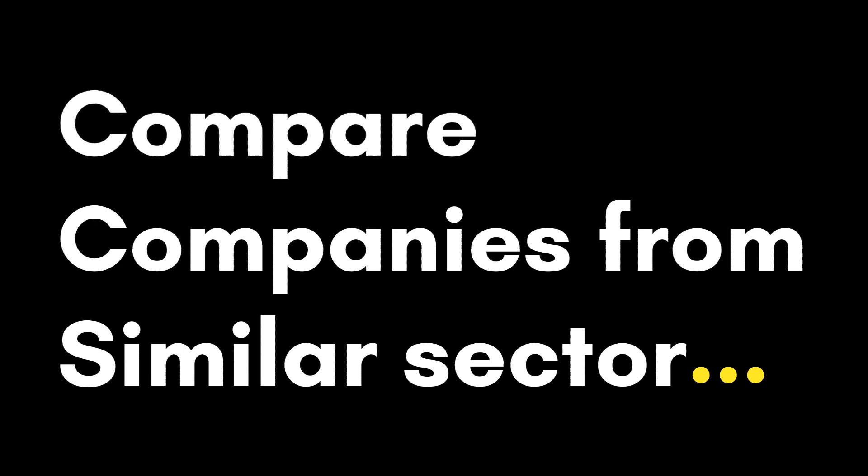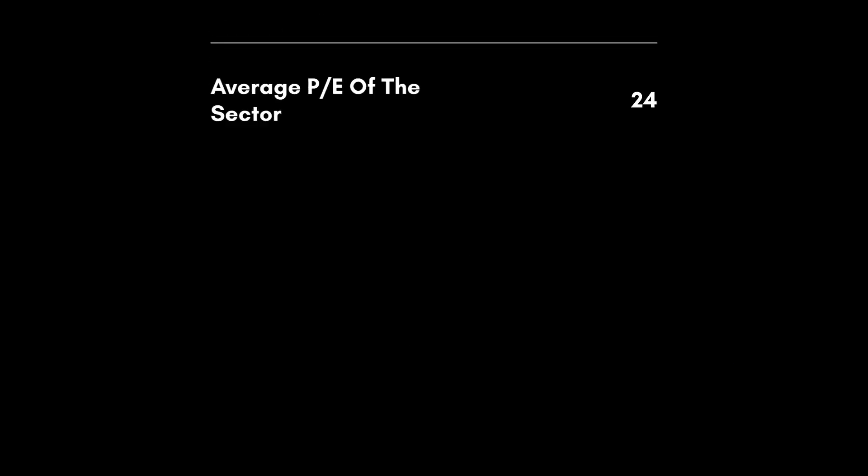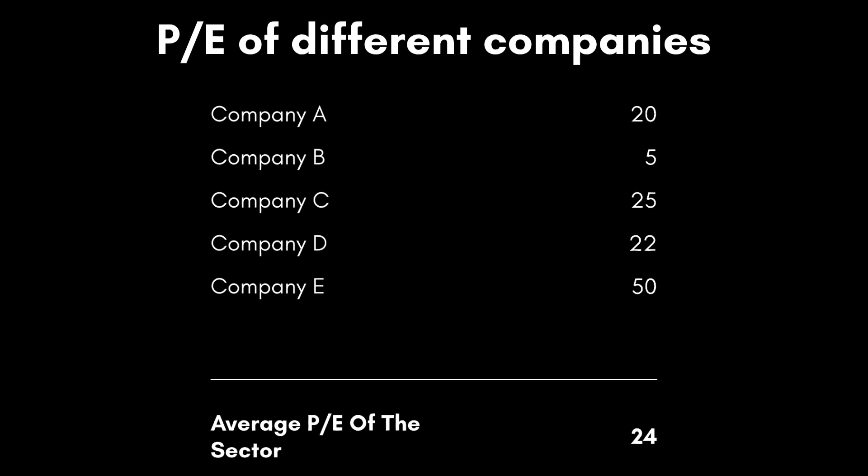Now let's see how we can use this tool to compare different companies from the same sector — it's like comparing smartphones with the same features from different companies in terms of value. Let's take an example of five companies from the same sector: A, B, C, D, and E. Let's say the current PEs of these companies are 25, 5, 25, 22, and 50 respectively, as shown. We can calculate the average PE of these five companies as 24, so the sector PE is 24.